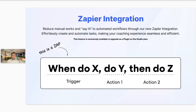The Zapier integration will save you even more time and allow you to connect with more external systems. This image here, where you can see when do X, do Y, then do Z, is a really good example of what Zapier does. It basically bridges the gap between Everfit and other systems to allow more automation. For example, when you add a client on Everfit, you can add them to a mailing system and then move them to your CRM — all connected using the Zapier integration.